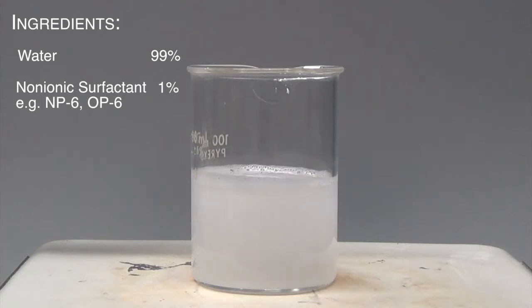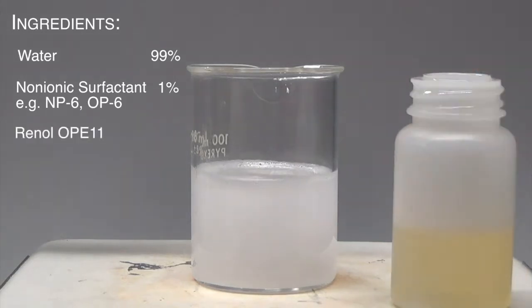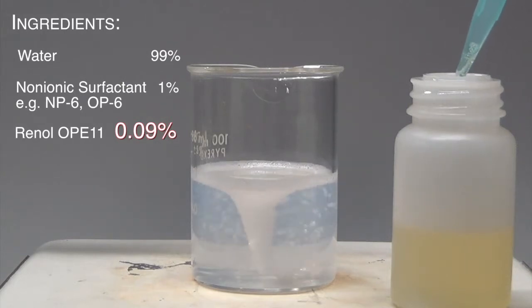At room temperature, the solution appears cloudy, meaning the surfactant is not soluble in water. We start adding Renal OP11 one drop after another, observing the solution become clear. It takes only about 0.1% of Renal OP11 to clear out the solution.